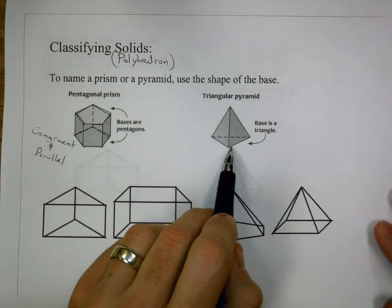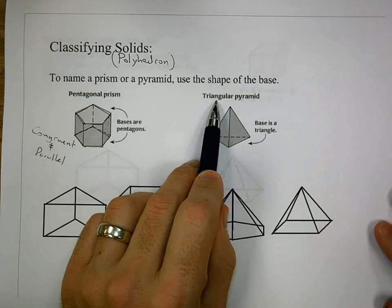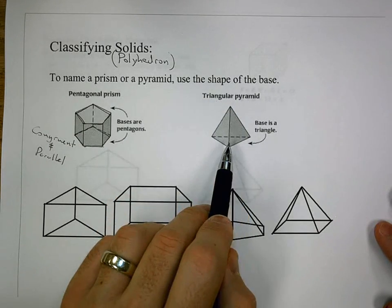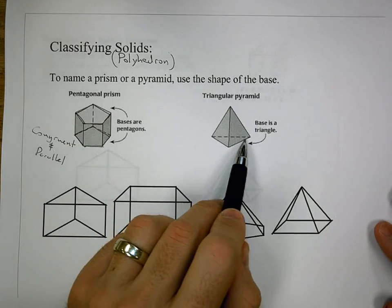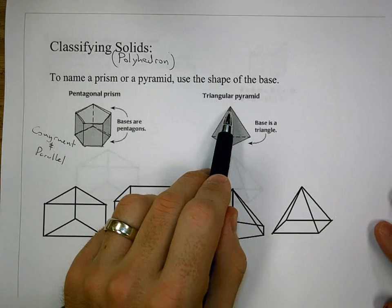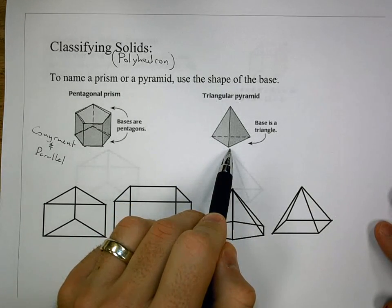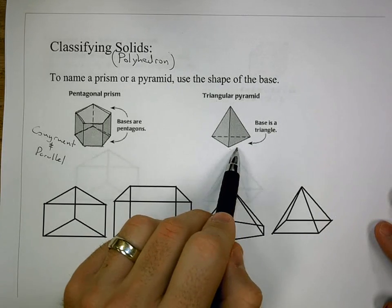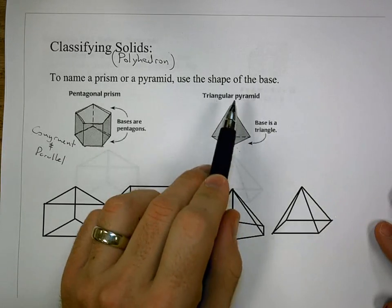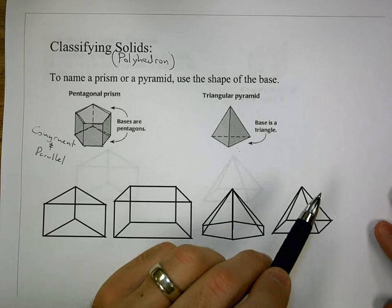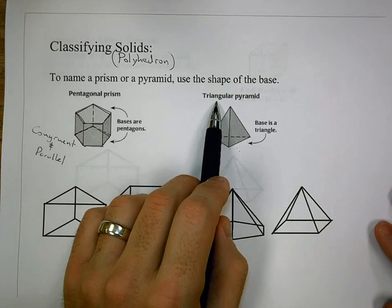If we look over here, we have a base that's a triangle. So that's going to give us a triangular pyramid. Now, a pyramid is going to have the flat base on the bottom, and it's going to have the point that each corner or each vertex on that base goes to. This does not have two bases. It just has one, goes to a point. But since it's a triangle on the bottom, we call it a triangular pyramid.